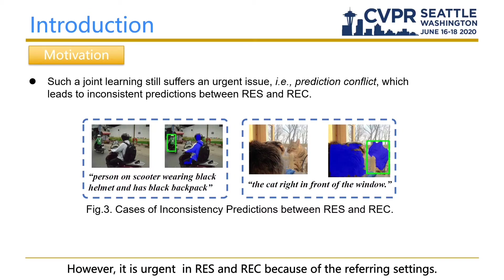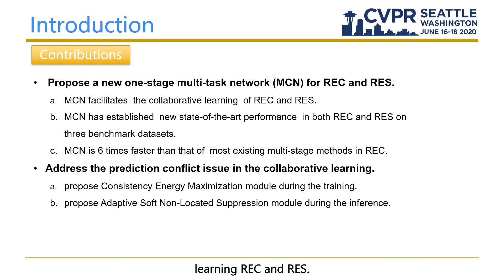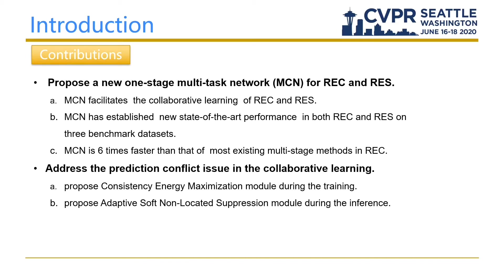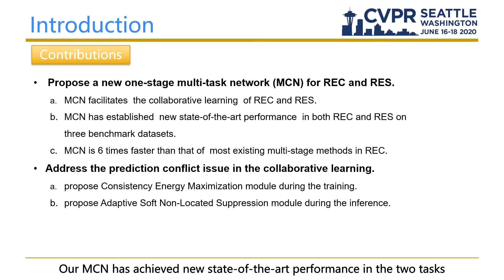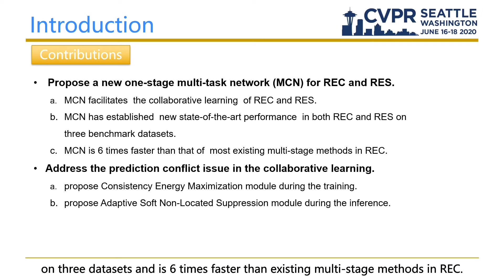Prediction conflict is urgent in REC and RIS because of the referring settings. In this paper, we propose a new one-stage multi-task network for jointly learning REC and RIS, and we address the prediction conflict issue by proposing two modules. Our MCN has achieved a new state-of-the-art performance on both tasks across three datasets, and is six times faster than existing multi-stage methods in REC.